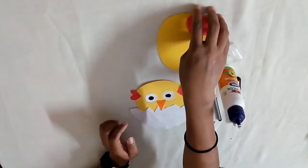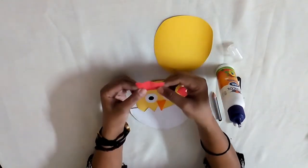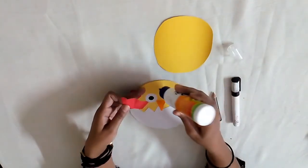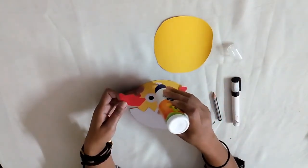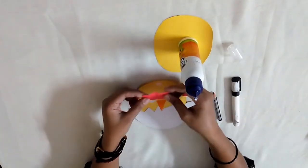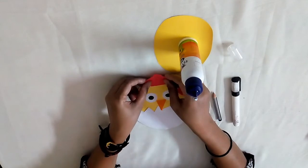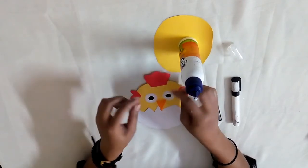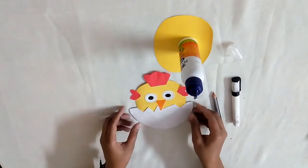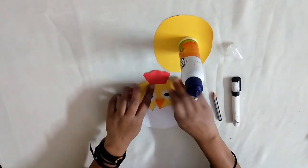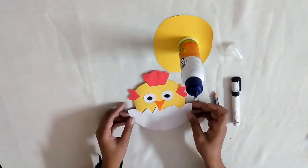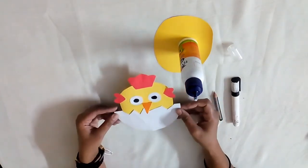Now I will stick red color crown. This is the crown. I will stick the red color crown. Now your hatching chick is ready.